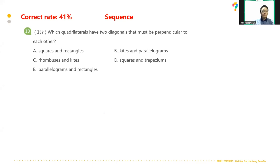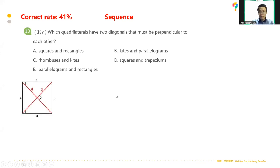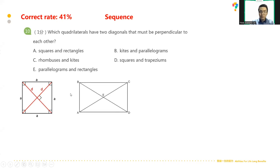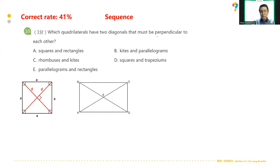Question number ten: which quadrilaterals have two diagonals that must be perpendicular to each other? For quadrilaterals, we have altogether six types. The first type is a square — its two diagonals are perpendicular to each other, so it counts. The second is a rectangle: rectangles have a pair of acute angles and a pair of obtuse angles between their diagonals, so they're not perpendicular. Rectangles don't count.